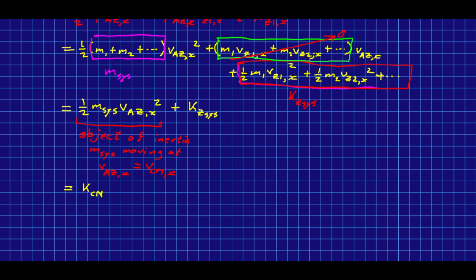And then we have this piece, which I've called k, the kinetic energy in the z frame of the systems. Relative speeds between the objects in the system.